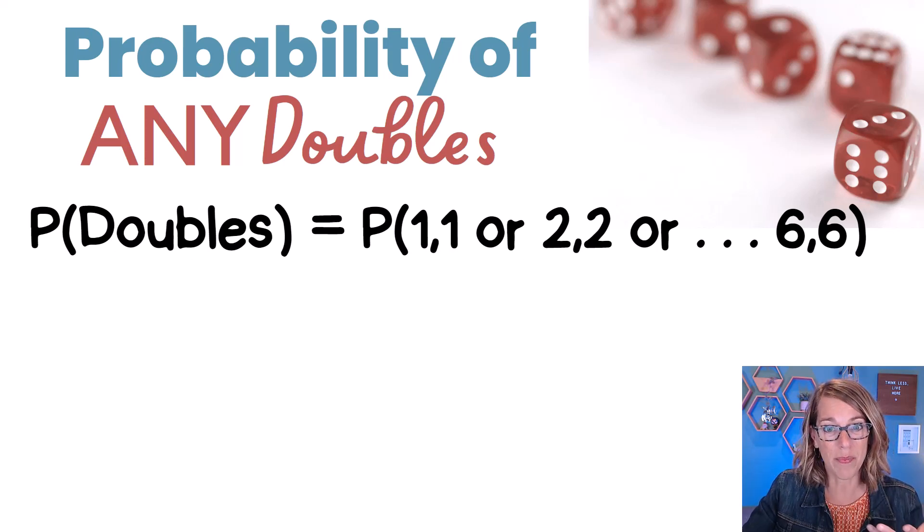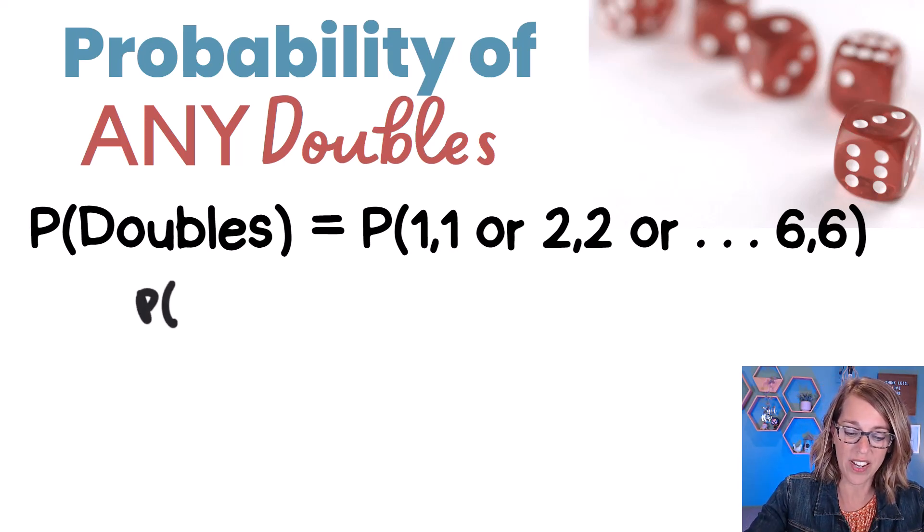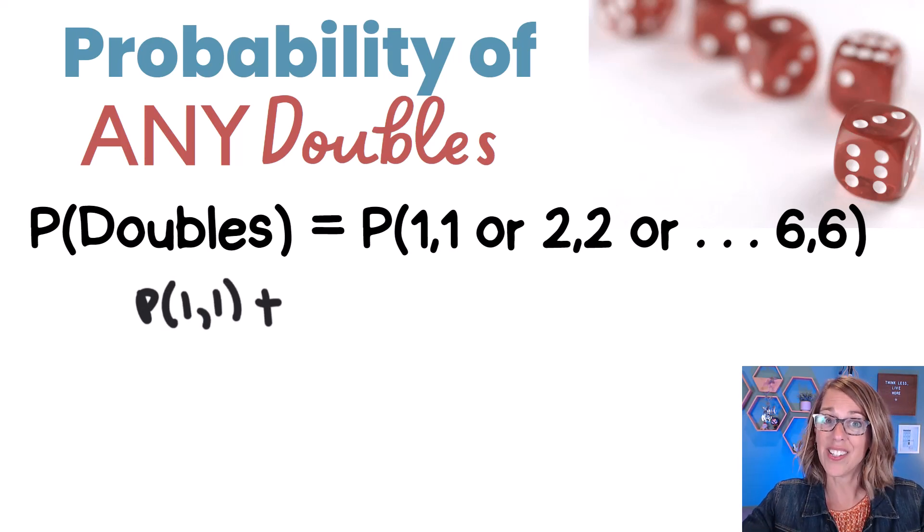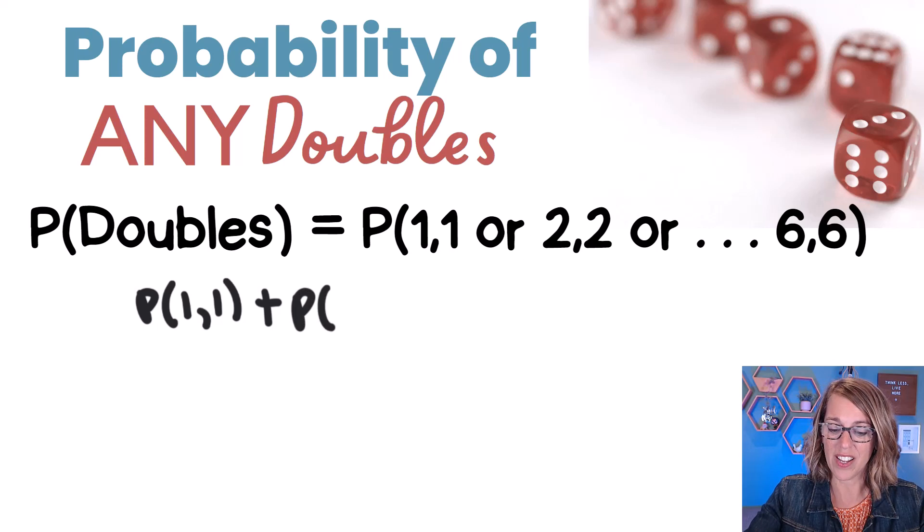Now in probability, that or means plus. So as I'm doing my probability of getting one and a one, I'm going to take that case and add it to the probability of getting a two and a two, plus so on and so forth.